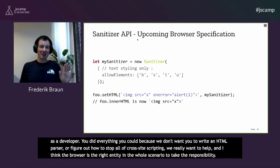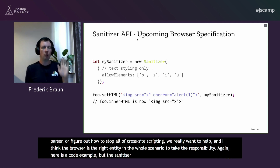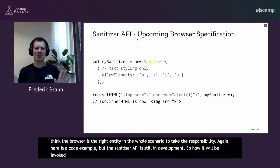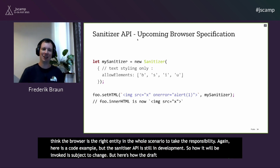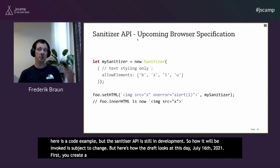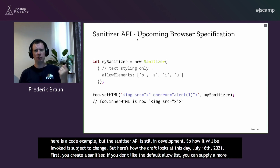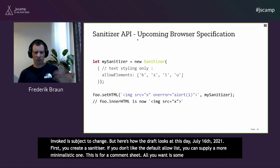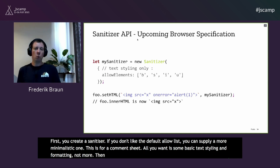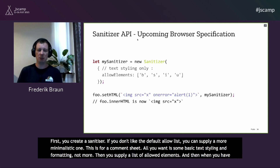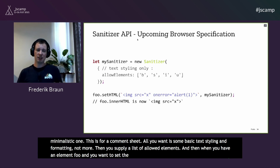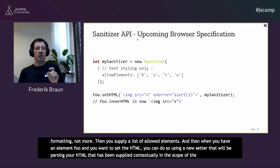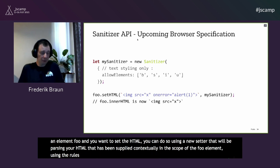Here is a code example, though the Sanitizer API is still in development, so the invocation is subject to change. As of July 16, 2021, the draft looks like this: first, you create a Sanitizer. If you don't like the default allow list, you can supply a more minimalistic one — for example, for a comment field where you only want basic text styling. You supply a list of allowed elements. Then when you have an element foo and want to set the HTML, you use a new setter that parses the HTML contextually in the scope of the foo element using the rules supplied in the Sanitizer, and the browser takes care of the rest.